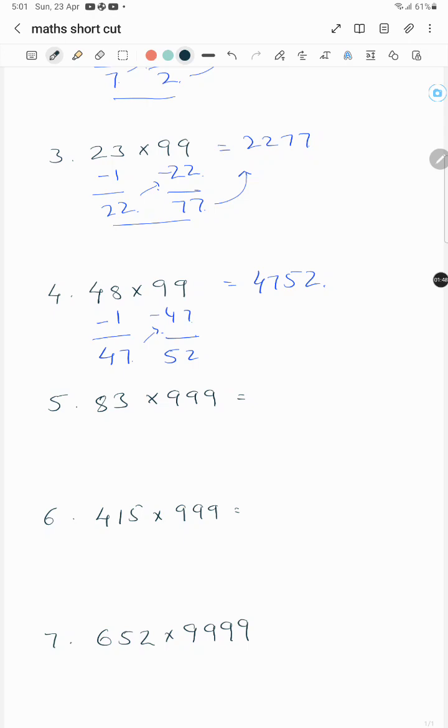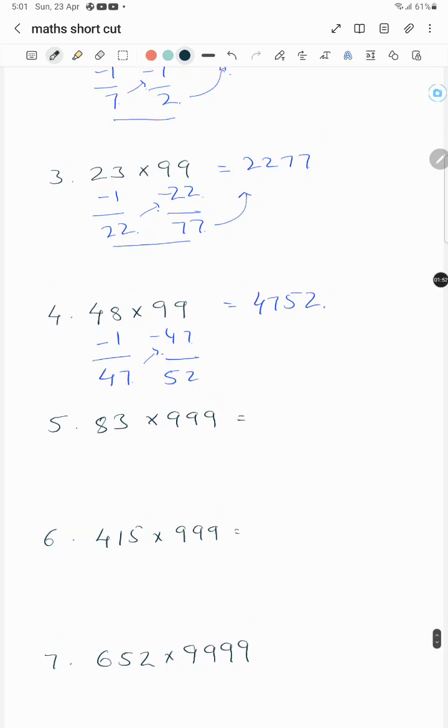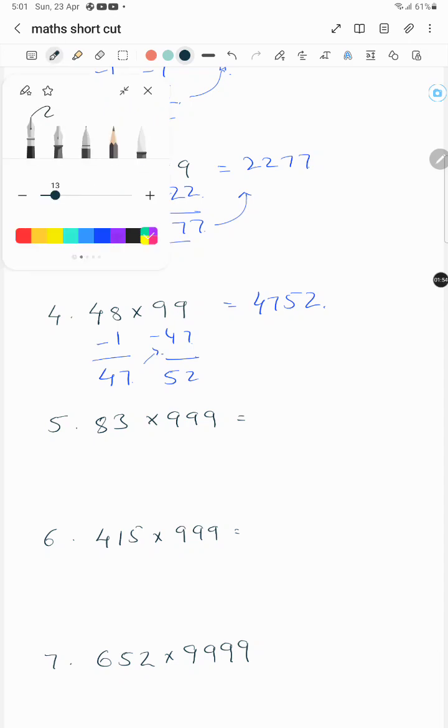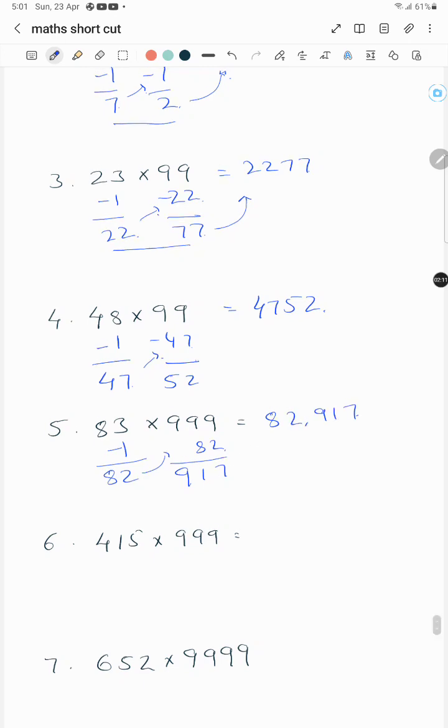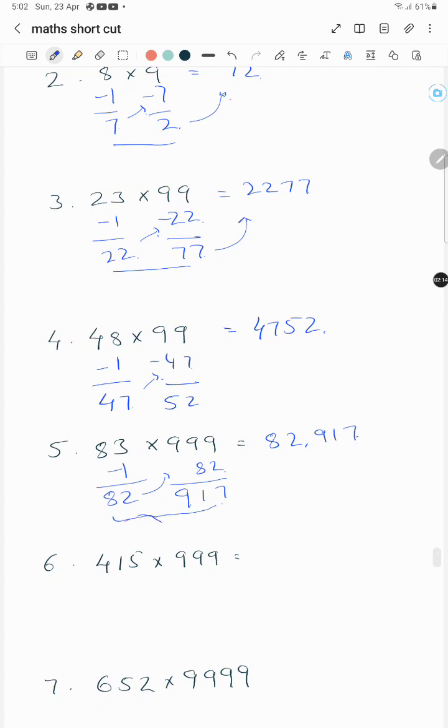So 83 into 999, just subtract 1, you get 82, and subtract this 82 from this, you will get 917. It is 82,917, and this is the multiplication answer.